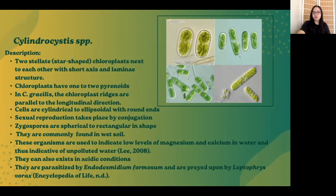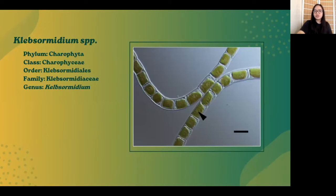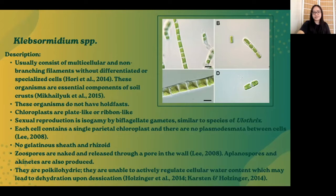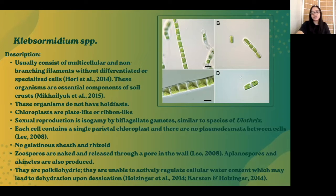Cylindrocystis organisms are used to indicate low levels of magnesium and calcium in water, and thus they are indicative of unpolluted water. They can also exist in acidic conditions. Lastly, they are parasitized by Endosporella thermarum and are fed upon by Leptothrix. Next, the genus Klebsormidium belongs to the family Klebsormidiaceae. They are filamentous algae that usually consist of multicellular, non-branching filaments without differentiated or specialized cells. These organisms are essential components of soil crusts, and they do not have holdfast. Their chloroplasts are plate-like or ribbon-like, and their sexual reproduction is isogamy by biflagellate gametes, similar to species of Ulothrix. Each cell contains a single parietal chloroplast, and there are no plasmodesmata between cells. The cells are cylindrical, with no gelatinous sheath, and rhizoidal. The zoospores are naked. Aplanospores and akinetes are also produced. Lastly, they are poikilohydric, which means they are unable to actively regulate cellular water content, which may lead to dehydration upon desiccation.